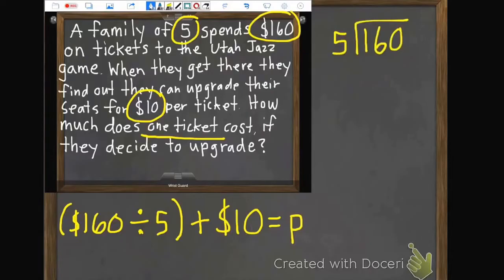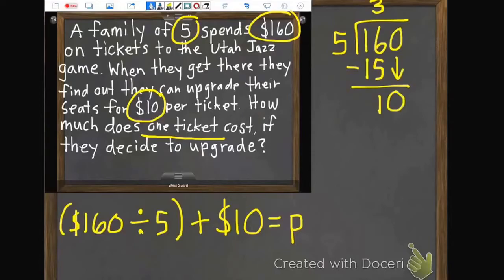So I'm going to do my first step, that part in parentheses. $160 divided by 5. So I do my first step. 5 can't go into 1, but it can go into 16 three times. Second step, multiply. 3 times 5 is 15. Third step, subtract. 16 subtract 15 is 1. Fourth step, bring down. We now have 10. Since I brought down, we start back at step number 1, divide. So I now have 10.